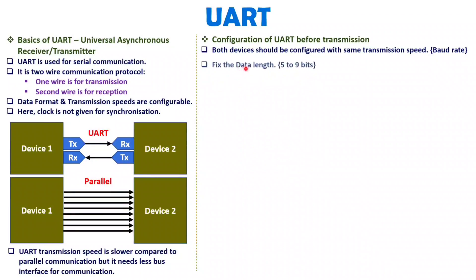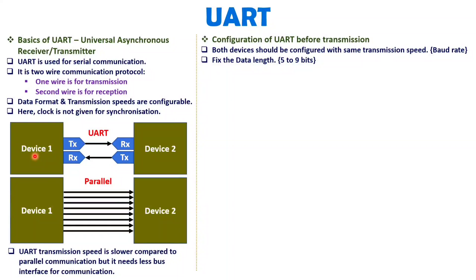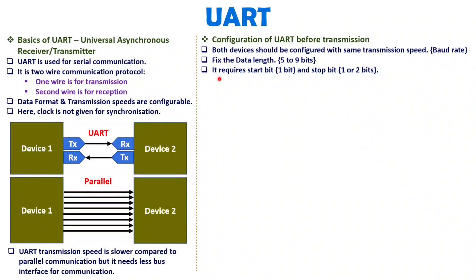After setting baud rate, we need to configure the data length. Both device 1 and device 2 must be configured at the same fixed data length. For example, if device 1 is configured with 8-bit data size, then device 2 should also be configured at 8 bits. Additionally, when transmitting or receiving, we forward start bits and stop bits. UART also uses NRZ (non-return-to-zero) coding for data communication.